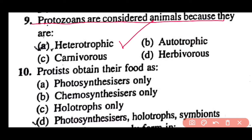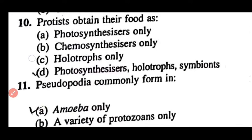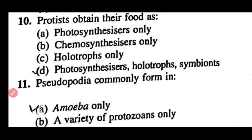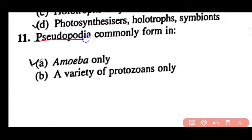Question 10: Protists obtain their food as photosynthesizers only, chemosynthesizers only, holotrophs only, or photosynthesizers, holotrophs as well as symbioids? Correct answer is option D. Protists obtain food through photosynthesis; they are also holotrophic, meaning they can ingest other organisms completely, and they can also obtain food through symbiosis. Question 11: Pseudopodia commonly form in Amoeba only. Correct answer is option A.